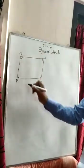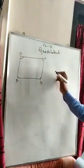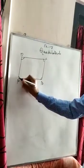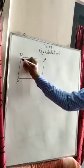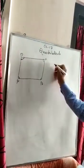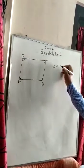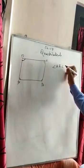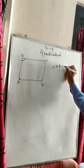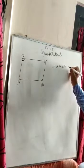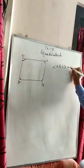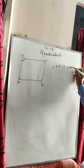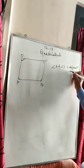This makes a quadrilateral. In a quadrilateral, angle A and angle D are known as adjacent angles. Similarly, angle D and angle A are adjacent angles.